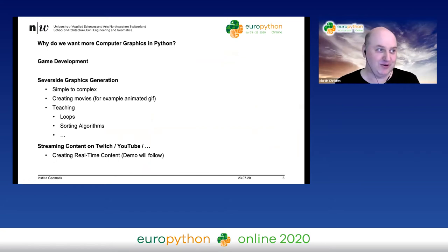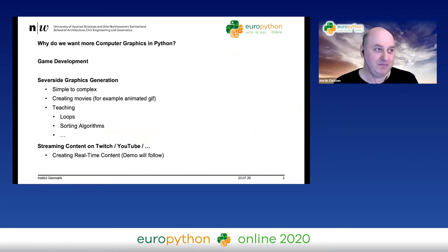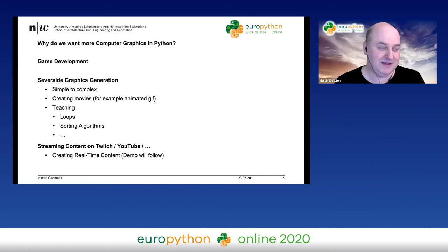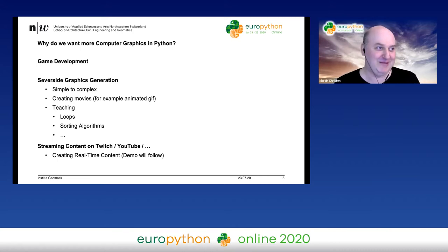That code is actually from the manual of the Commodore — it came with this basic code and you could create graphics. We saw in the previous talks also some nice graphics, and the problem in Python is we don't have something built in to create that easily. I really want something where I can write a couple lines of code and see something. That's my basic motivation.